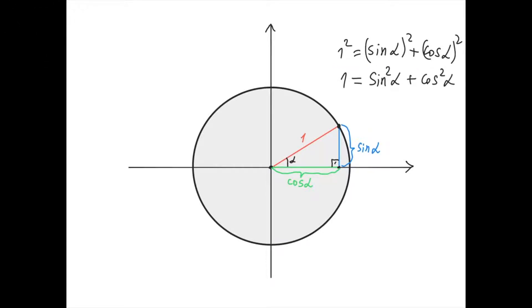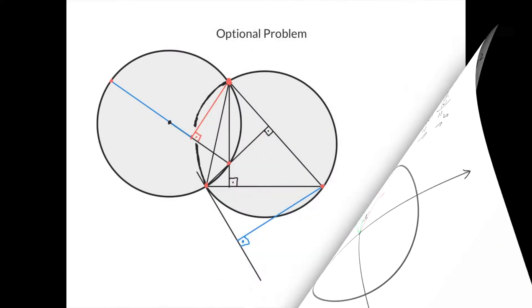I can rewrite this expression where sine squared of alpha means the same thing as sine of alpha squared. This identity is called the fundamental trigonometric identity, and it's true for all angles alpha.